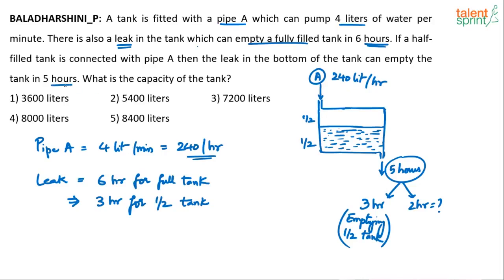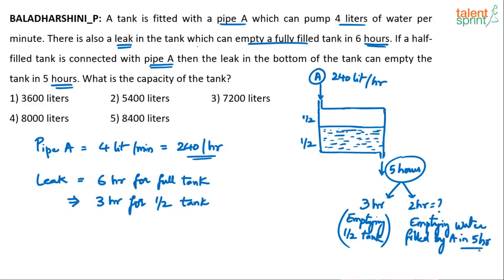Pipe A was working for how many hours? For 5 hours — remember, the tank is connected with pipe A and the leak empties it in 5 hours, meaning pipe A was working continuously for 5 hours. The most common mistake is to consider only 2 hours of pipe A — no, pipe A worked for 5 hours. If it fills 240 liters in 1 hour, in 5 hours it fills 1200 liters.